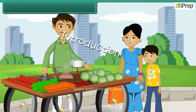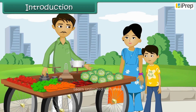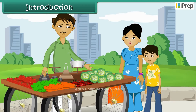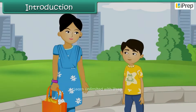Little Madhav went to the bazaar with his mother. His mother bought some vegetables, some fruits, and some flowers for puja. He asked his mother how we obtained those.